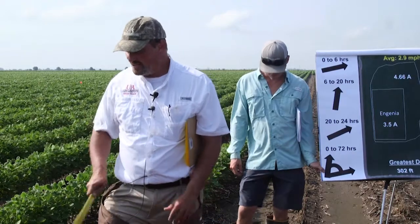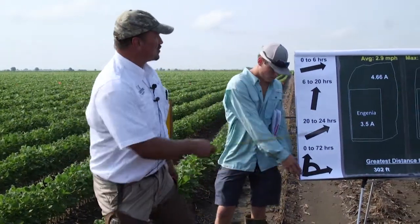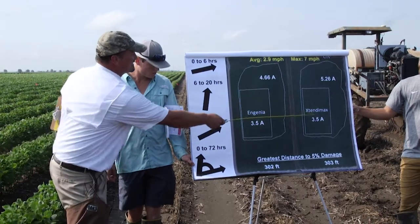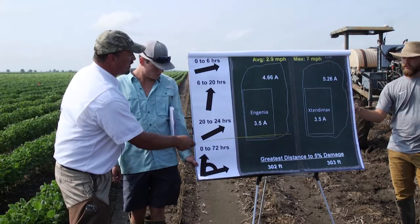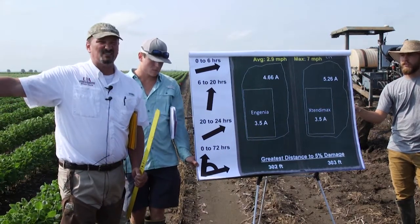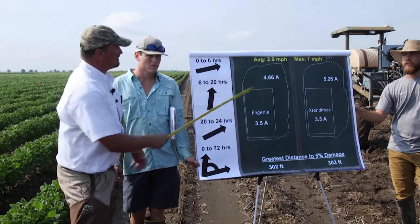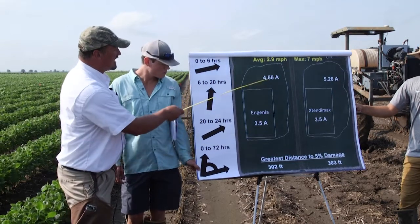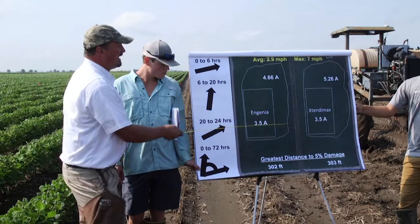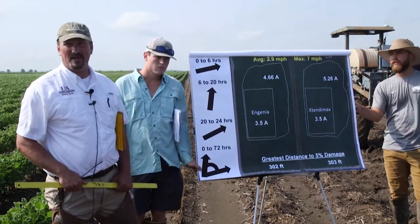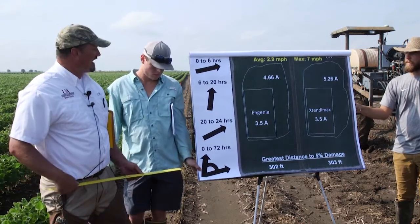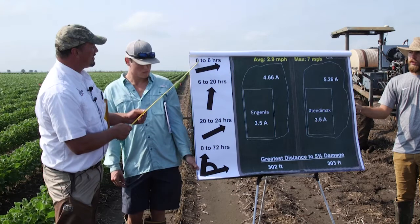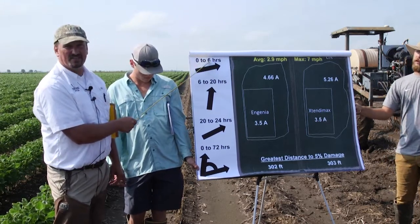At 12 days after application, we marked the periphery of where we saw 5% damage. We had 4.66 acres damaged from Ingenia and 5.26 acres damaged from Extendamax — after spraying only 3.5 acres. During the application, the 2.9 mile per hour wind was blowing out of the west and continued blowing out of the west for 0 to 6 hours after application.